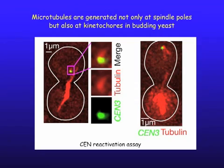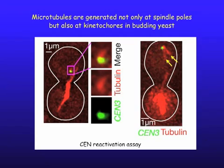To study this, we used an engineered centromere reactivation assay. In the left-hand cell, we have a mitotic spindle here, as shown by the yellow arrow. You can see a tubulin signal is slightly extended from Sen3. In the right-hand cell, two microtubules are more clearly extended from Sen3. These microtubules are not connected to the spindle and they are generated at the kinetochore.